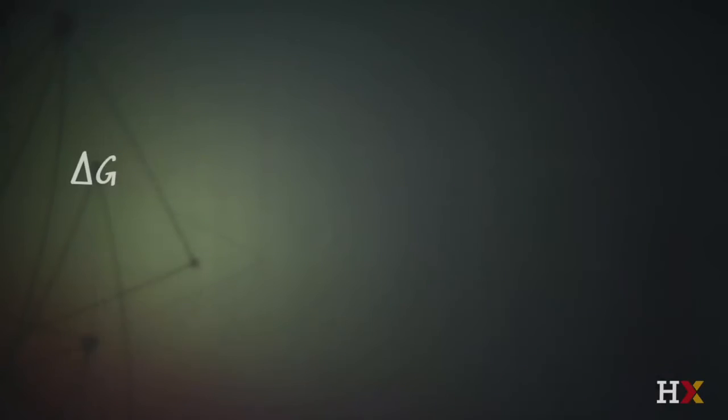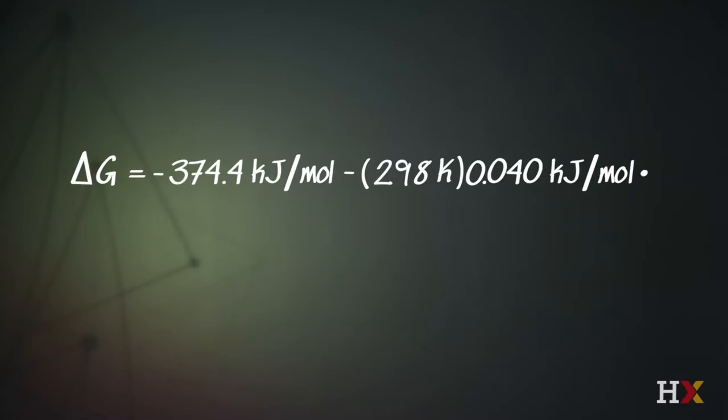Let's quickly write down what our calculated delta G was. That was equal to minus 374.4 kilojoules per mole. And then we have the entropy term, which is minus the temperature, 298 Kelvin, times 0.040. Now I've converted this to kilojoules by dividing it by 1,000, so that's kilojoules per mole per degree Kelvin.